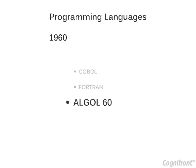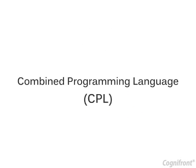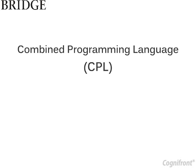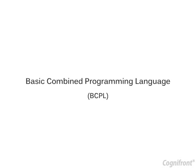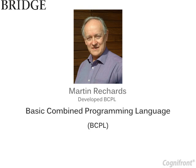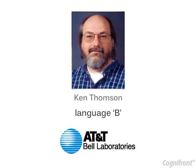However, Algol-60 was too abstract. In order to reduce its abstractness, a new language called Combined Programming Language, CPL, was developed at Cambridge University. Then came the Basic Combined Programming Language, BCPL, which was developed by Martin Richards at Cambridge University. At the same time, a language called B was written by Ken Thompson at AT&T's Bell Labs.